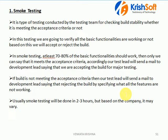Once we get the build from the development team, a release notes document will be there. That document contains what features or functionalities they have developed and what are all the known issues. Known issues means the bugs already identified by the development team but not fixed due to lack of time or other reasons. In smoke testing, from the testing side, we are going to check whether each and every basic functionality is working fine or not.